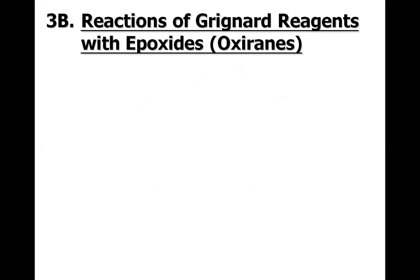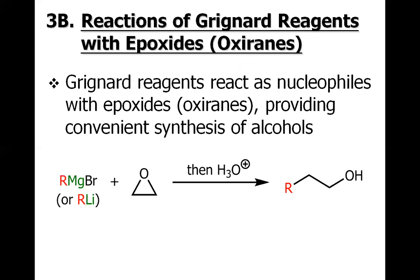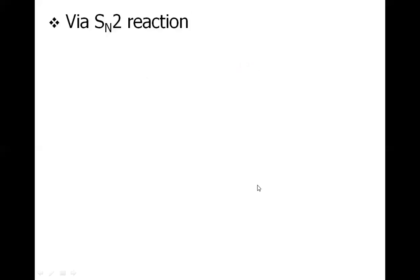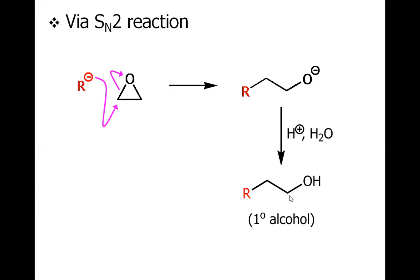Now let us discuss the reaction of the Grignard reagent with epoxides. Epoxides are cyclic ethers and their IUPAC name is oxirane for the first member. When treated with organomagnesium or organolithium, there will be opening of the epoxide ring and formation of a primary alcohol. This is an SN2 reaction in which the alkyl anion attacks one of the carbons of the epoxide, the C-O bond cleaves, the three-membered ring opens, and the intermediate is protonated to give the primary alcohol.